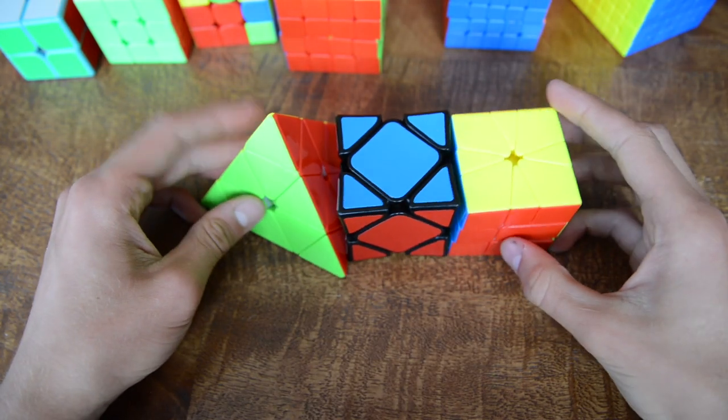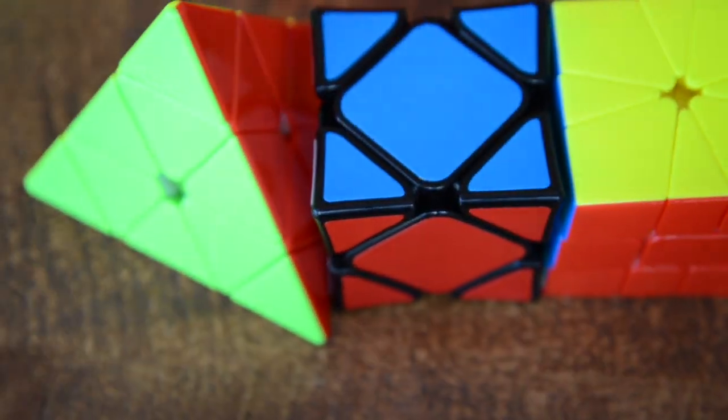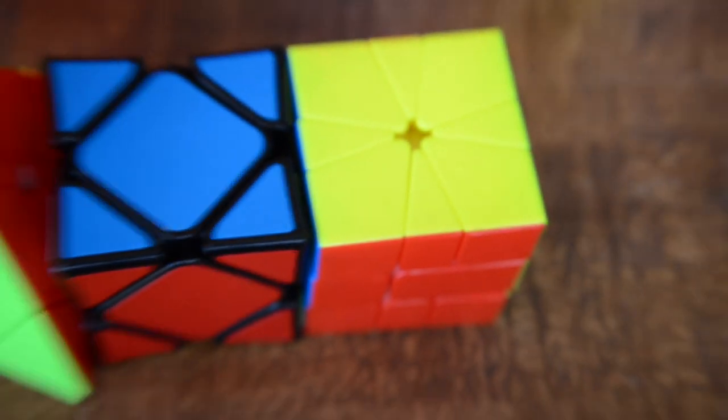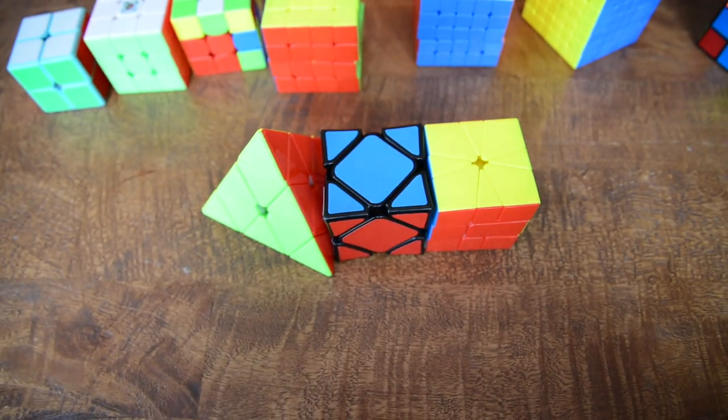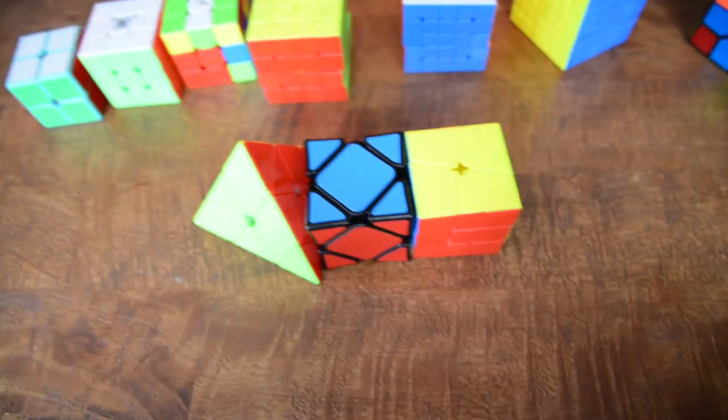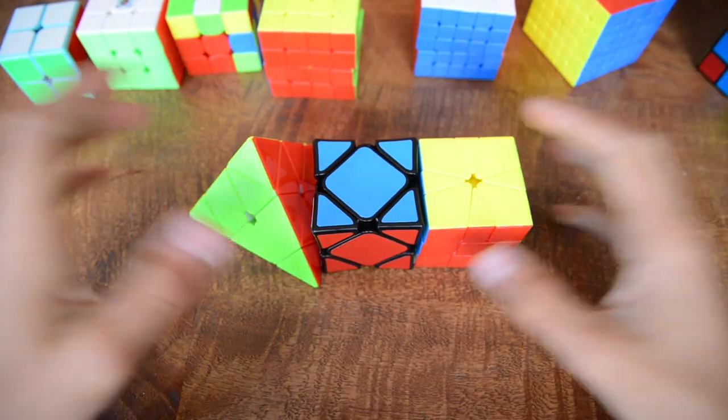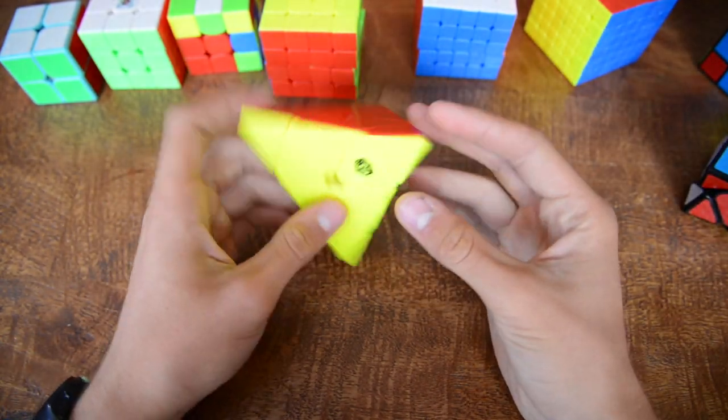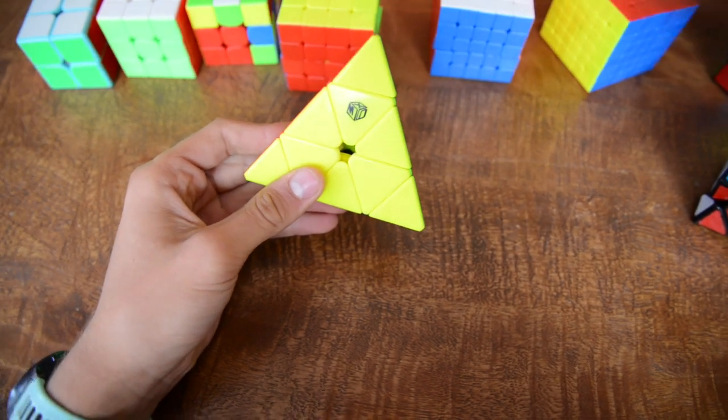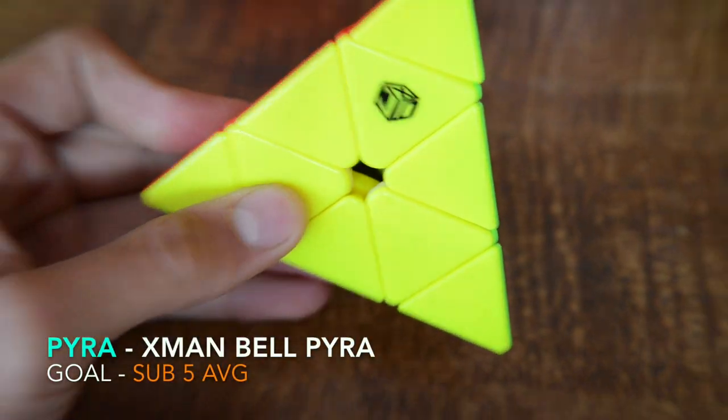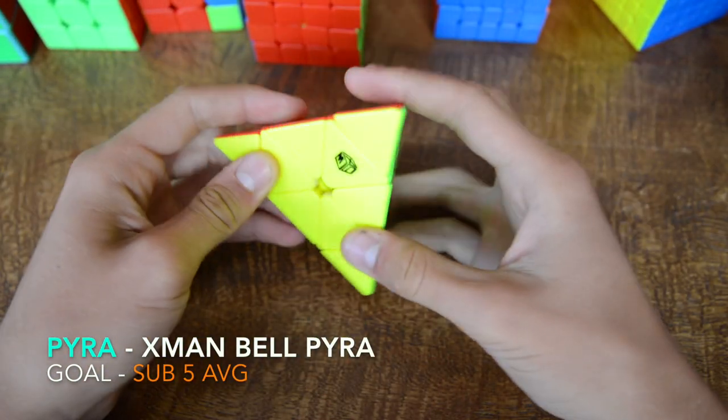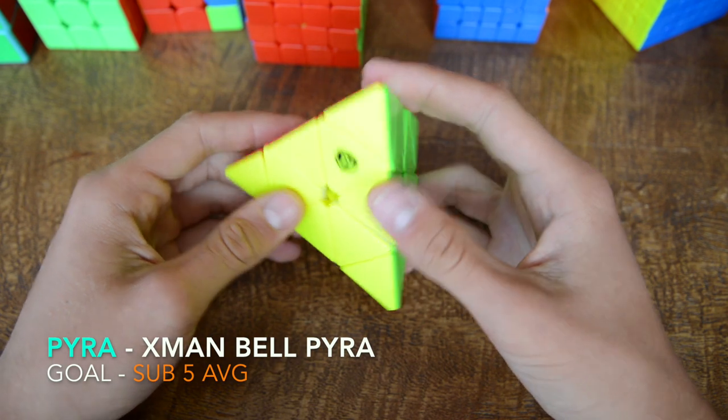Next up we have three events that I am very hyped for. We have the pyraminx, the skewb, and the square one. In all of these I have a chance. Okay camera please do not move right now because it's really epic. We're going to start with pyraminx. This is the X-Men Bell pyraminx, magnetic and stickerless.